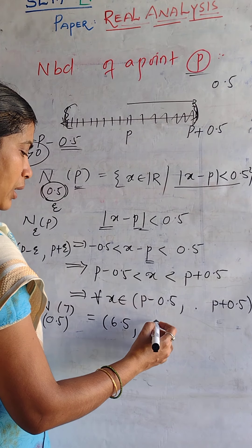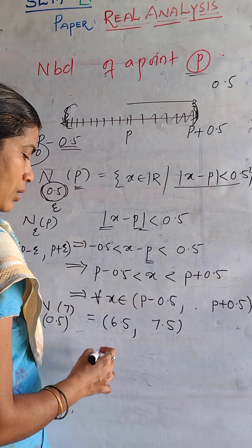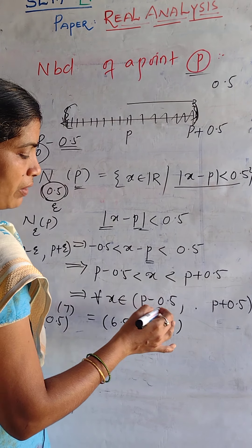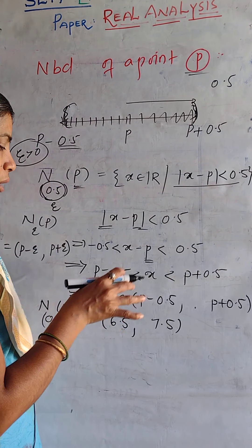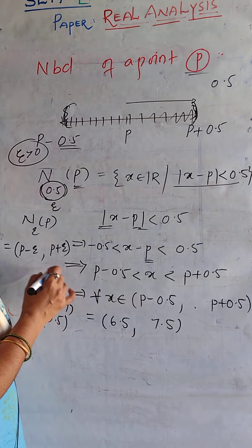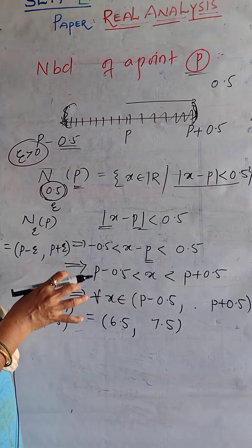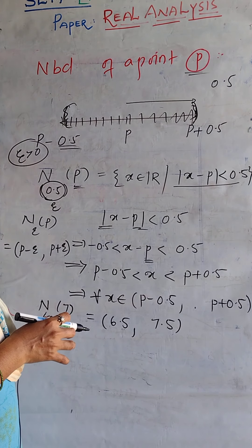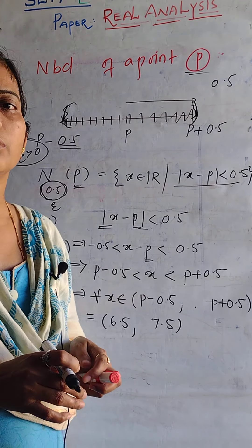For example, the 0.5 neighborhood of point 7 consists of all real numbers x such that x minus 7 is less than 0.5, that is x is in the interval 6.5 to 7.5.